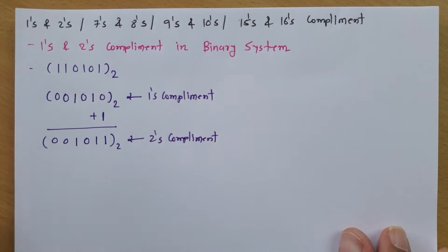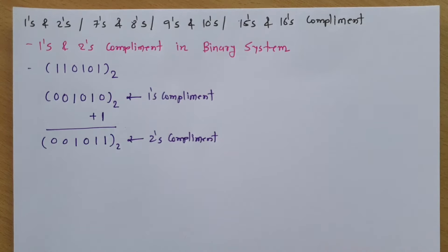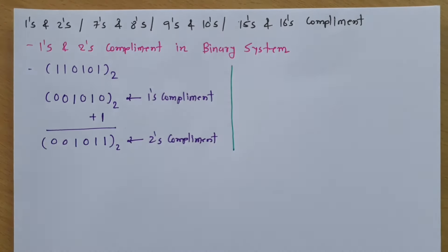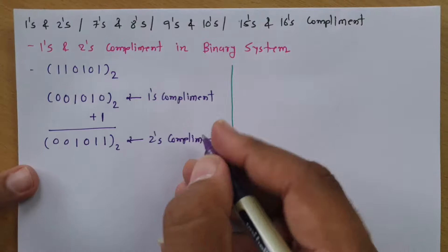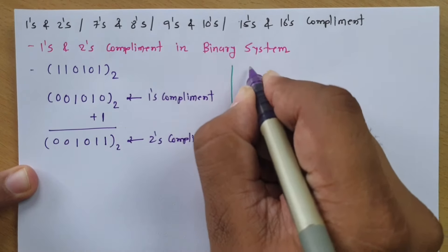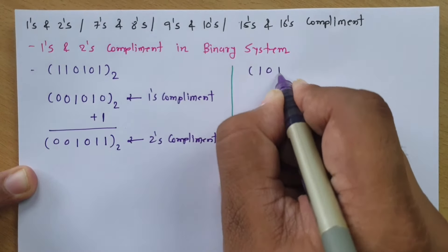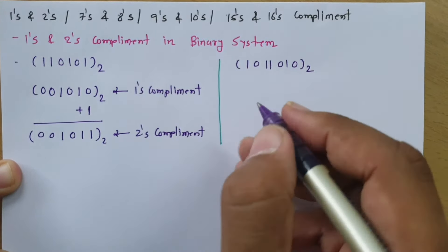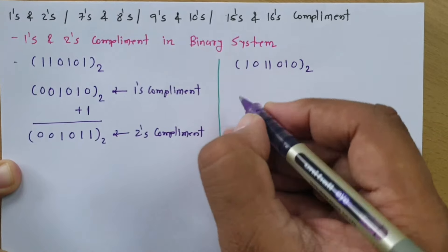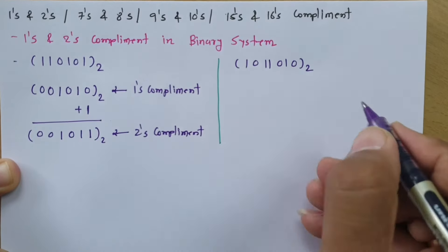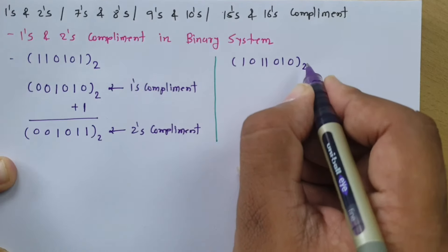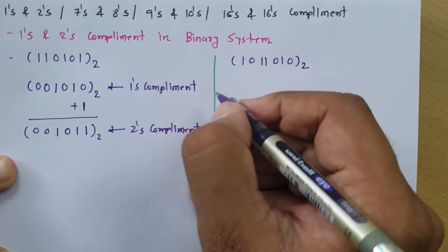Let me give you one more example to make this clearer. Here we have binary data 1 0 1 1 0 1 0, and we need to convert this into 1's complement first. As before, we replace 1 with 0 and 0 with 1 to get 1's complement.